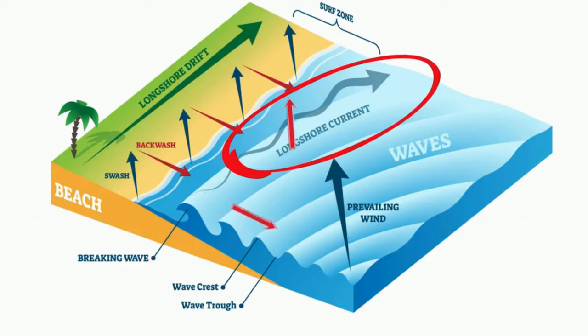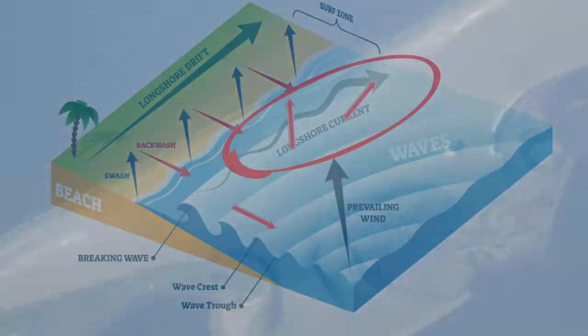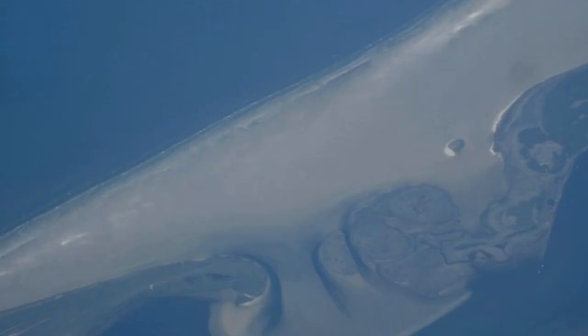This action creates longshore currents that move in a direction parallel to the shore. These longshore currents can transport and deposit materials offshore and may, over a period of time, create a landform offshore like a barrier island.